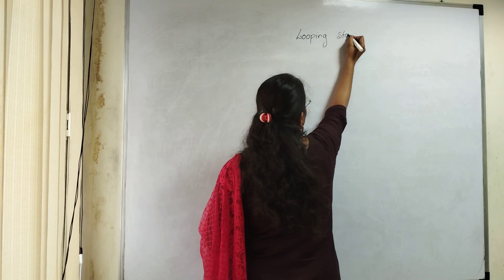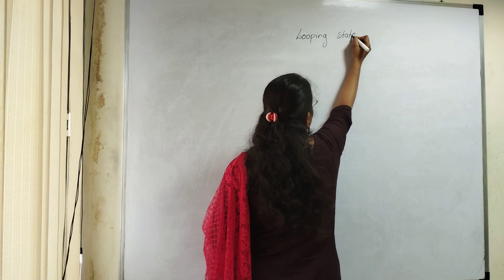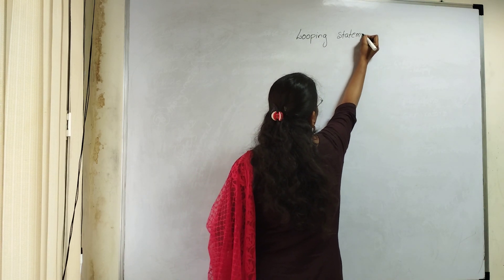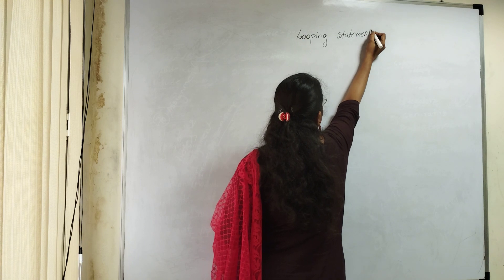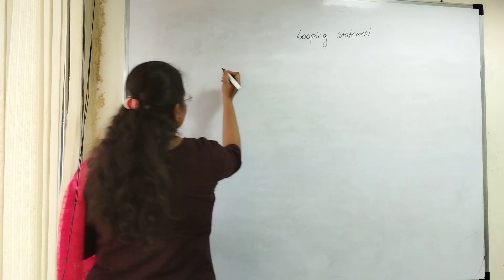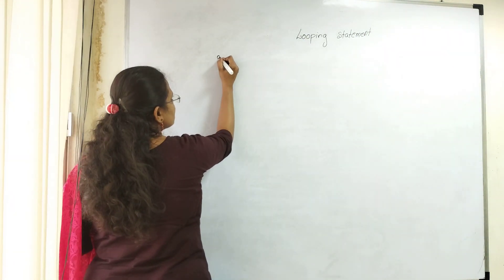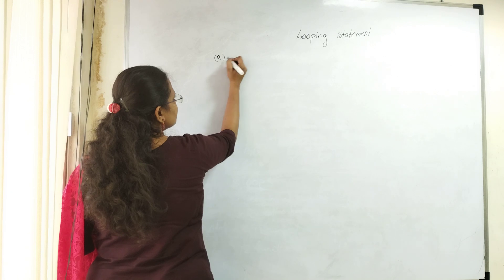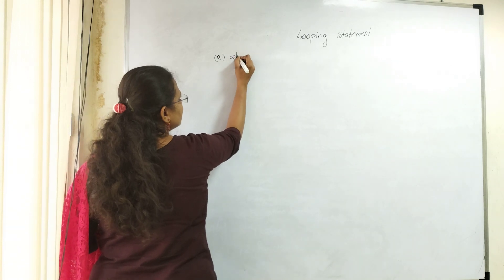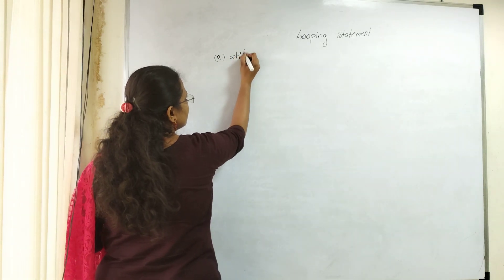So how many types of loops we are having? Three loops. I would like to discuss about the first one — while loop.